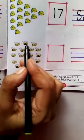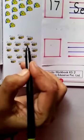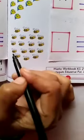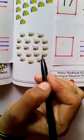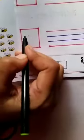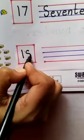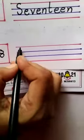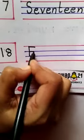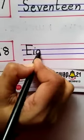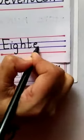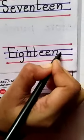1, 2, 3, 4, 5, 6, 7, 8, 9, 10, 11, 12, 13, 14, 15, 16, 17, 18. 18 honeybees. We will write here number 18 and here we will write the spelling or number name of 18: E, I, G, H, T, E, E, N. 18.